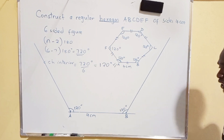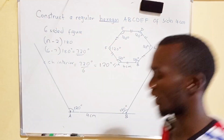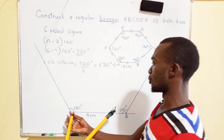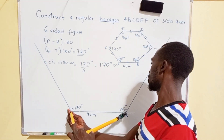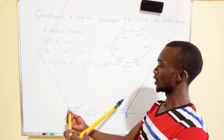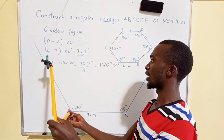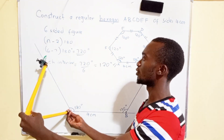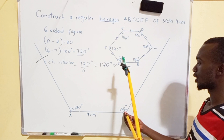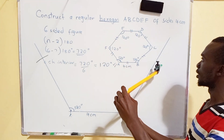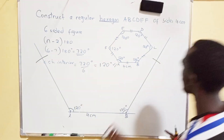Since AB is 4 centimeters, BC and AF must also be 4 centimeters, as all sides are equal in a regular polygon. I use the compass set to length AB. Standing at point A, I make an arc on the line from A toward F — that is point F. Standing at point B with the same measurement, I make an arc on the upper side — that is point C.